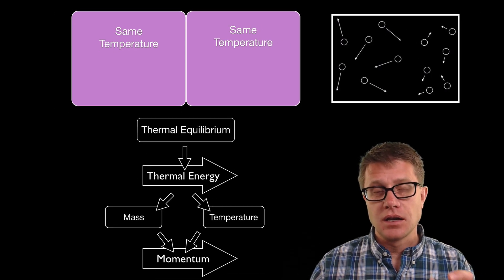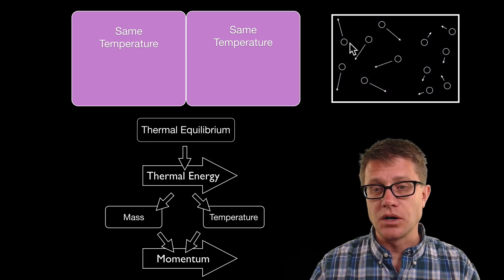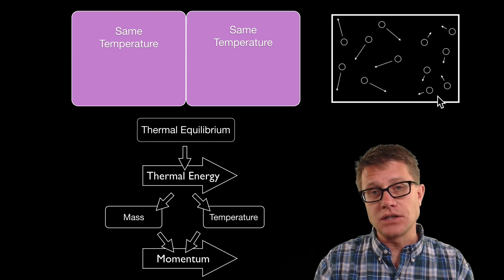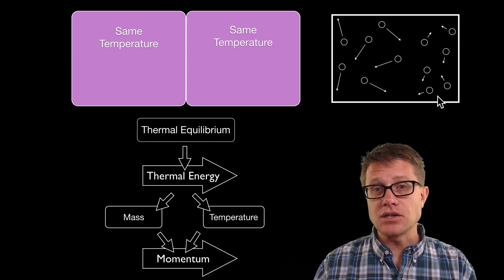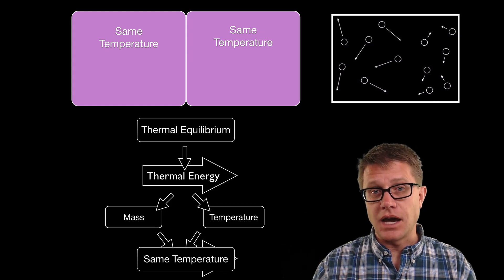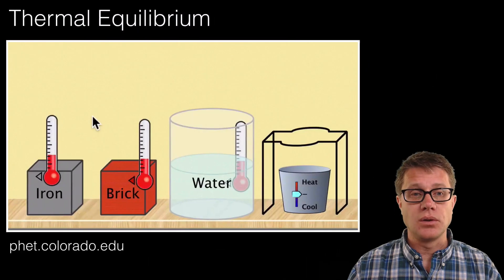This is all based on conservation of momentum. The molecules on the left side when it was warmer are moving faster. As they collide with those on the right side, they are transferring that momentum to the right side. Eventually, since momentum is conserved, they all have the same temperature over time as those collisions start to equalize.